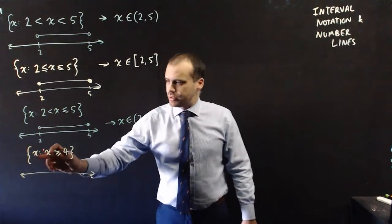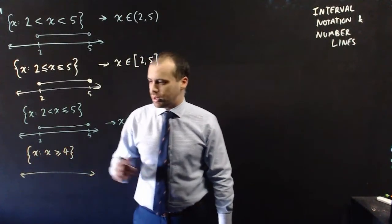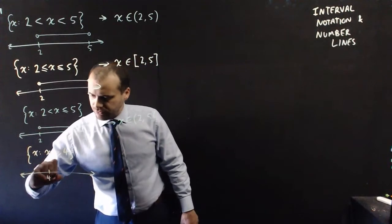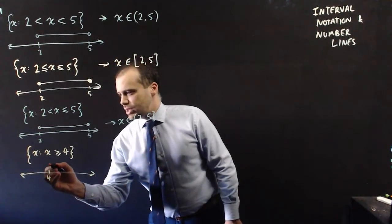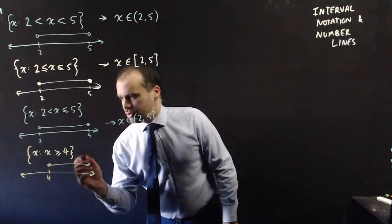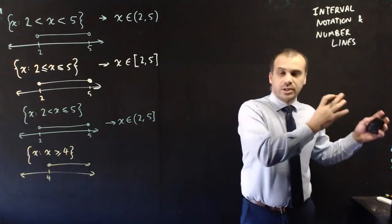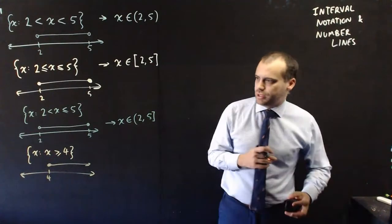So what about this one? x is in the set where x is greater than or equal to 4. Alright, let's draw it. We've got 4 there. Greater than or equal to means that we use this one here. And then we go on. But this goes on forever and ever and ever, because x could be a million, a billion, a gajillion. It goes all the way out to infinity.